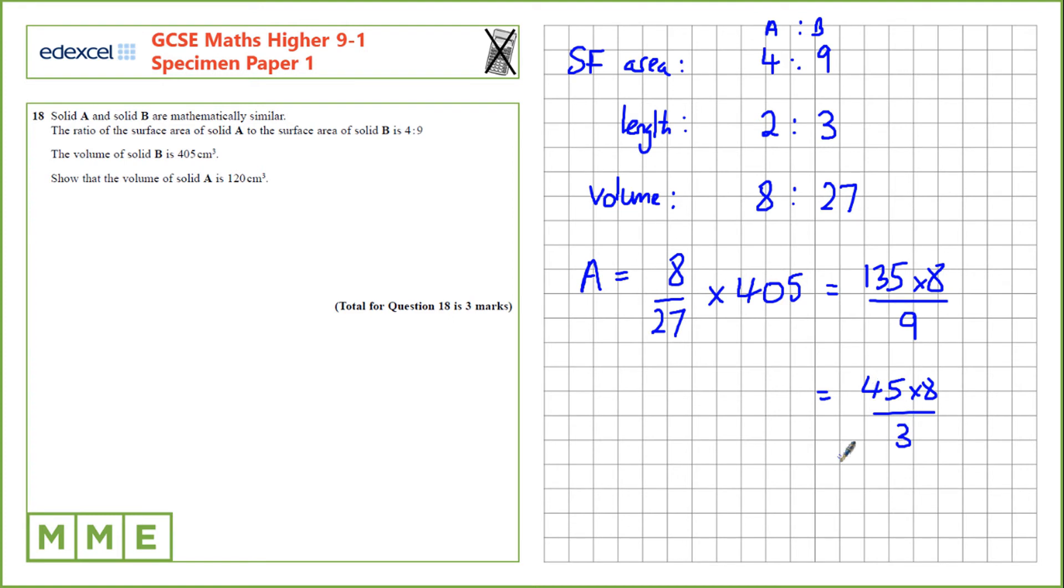We can divide again. 45 divided by 3. 15 times 8 is 120 cm cubed.